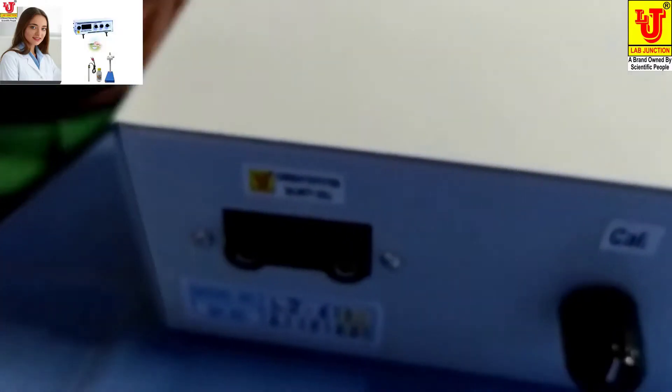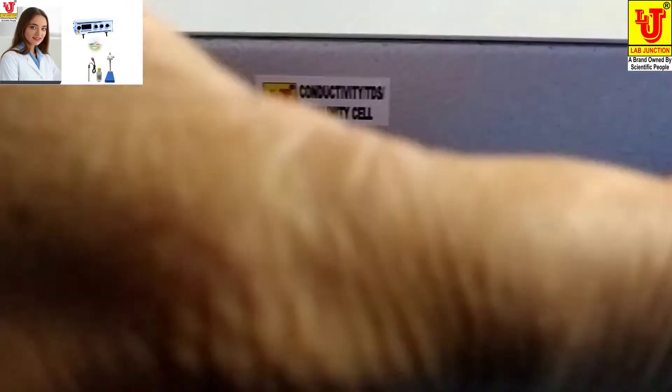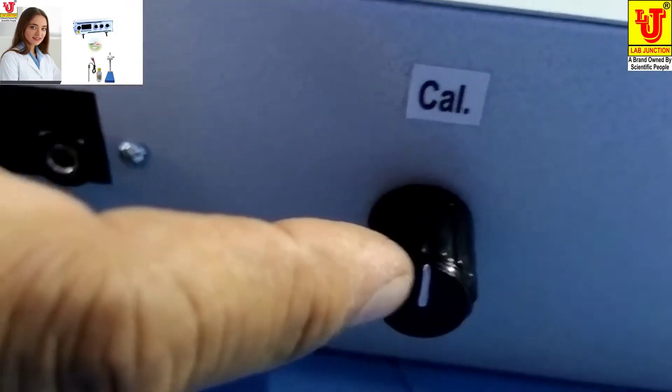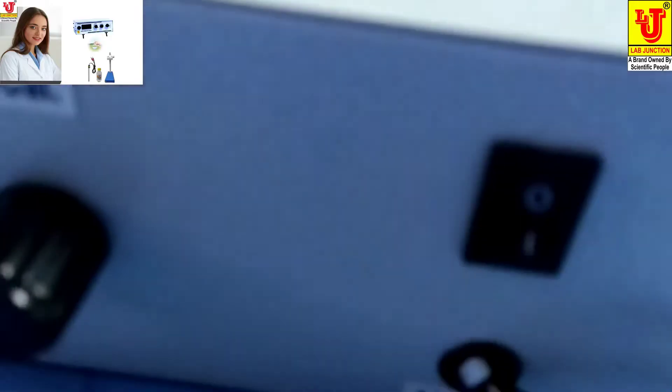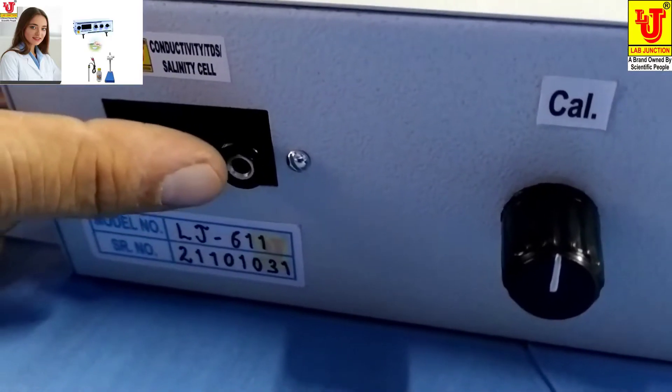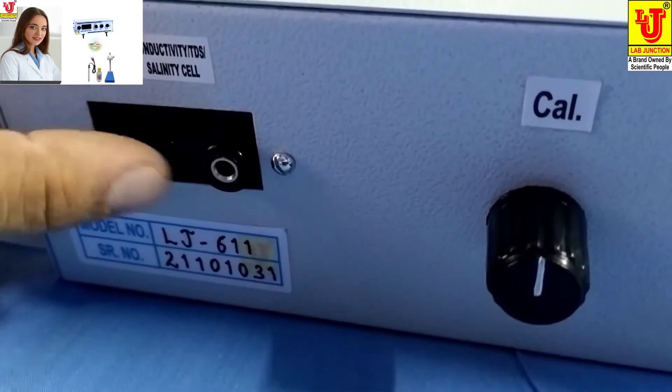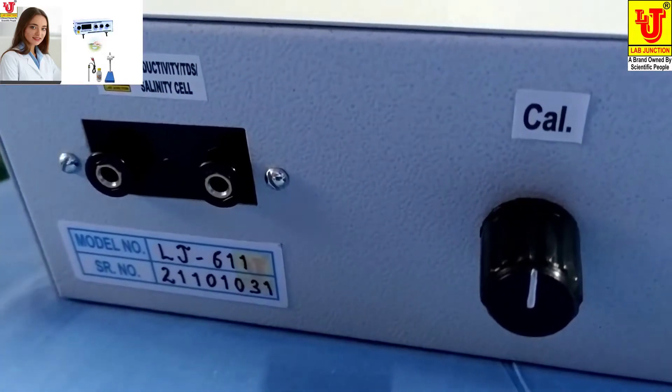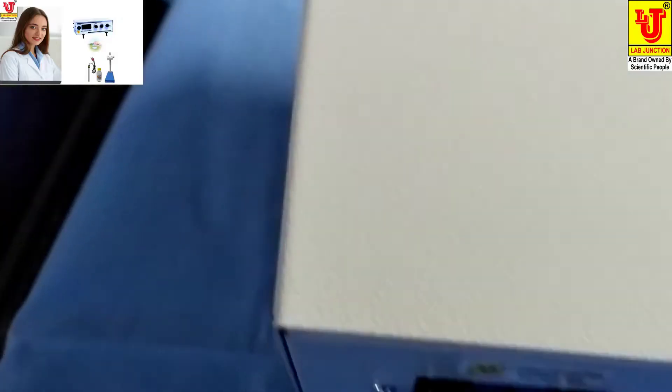On the back side, one control is for check position, one is switch off, and the third one is banana sockets for the conductivity cell.